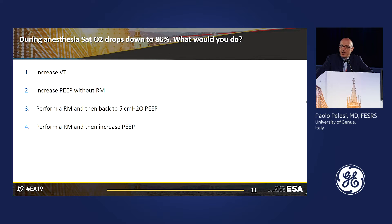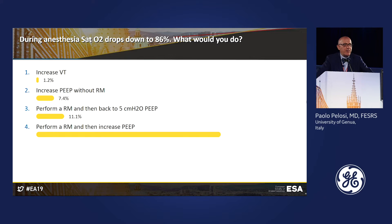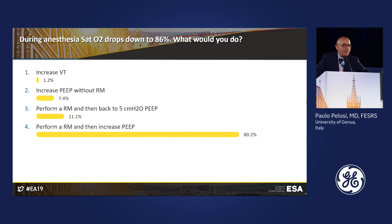Different strategies to deal with the saturation drop. Of course, you have to exclude tube malposition and secretions. The result: recruitment maneuver followed by increased PEEP was chosen by most — about 80% of respondents.